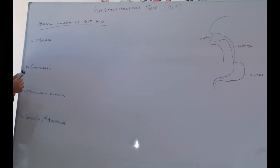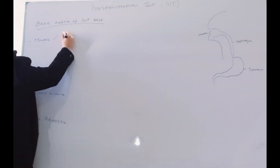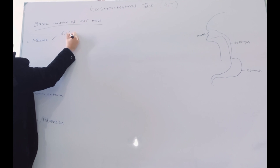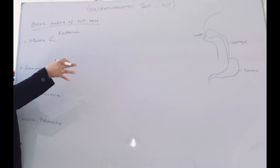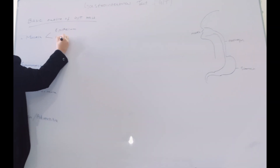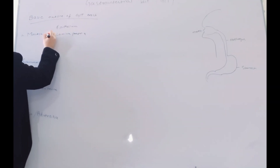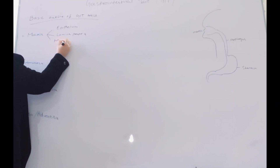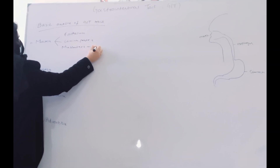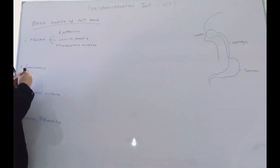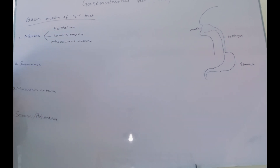Firstly, we will discuss the mucosa. What structures are included in the mucosa? Mucosa includes three structures: number one is the epithelium, next we will find the lamina propria, and the third one is the muscularis mucosa.